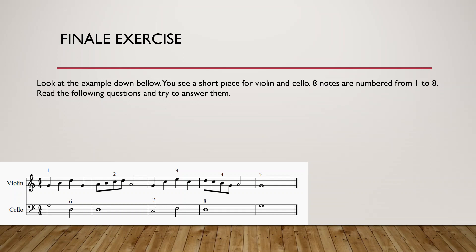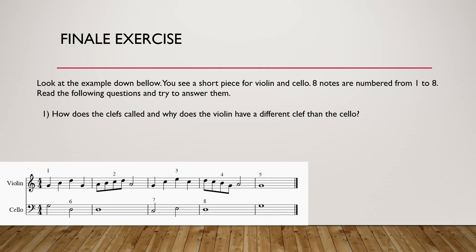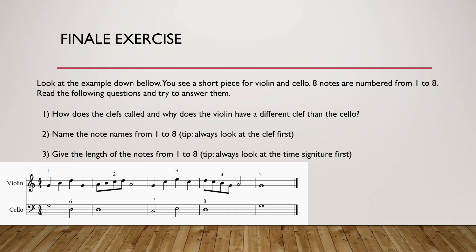So let's do a final exercise to see if you guys understand what I've been talking about in this first lesson. Look at the example below — you see a short piece I have quickly composed for violin and cello. Eight notes are numbered from one to eight. Please read the questions and try to answer them. You can take a piece of paper and a pen and pause this video, or you can just wait a few seconds because I will reveal the answers right now.